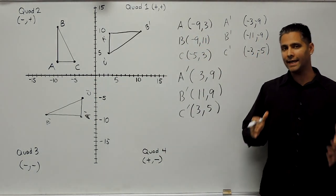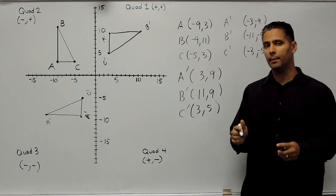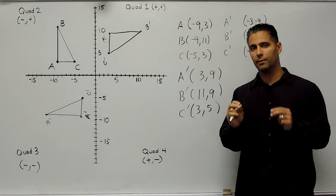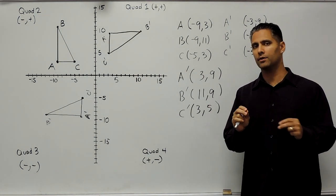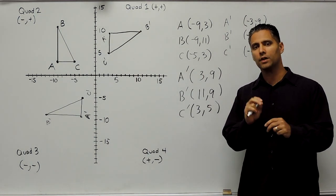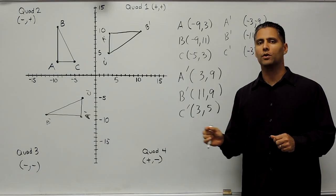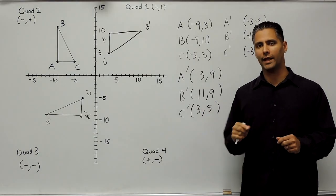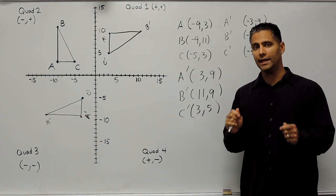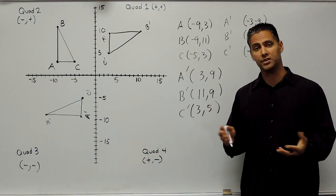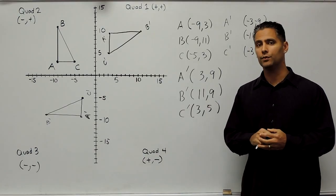So to do any 90 degree rotation, remember: take the two coordinate values, ignore the sign to begin with, and switch them around. After switching, determine what quadrant you will end up in, and write in your signs according to that quadrant. That's all you have to do for any 90 degree rotation.